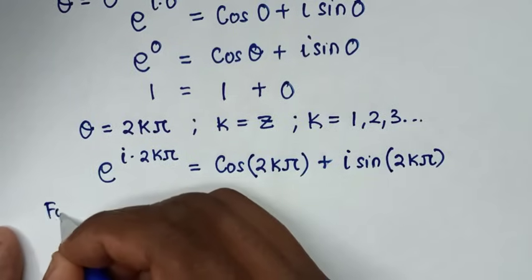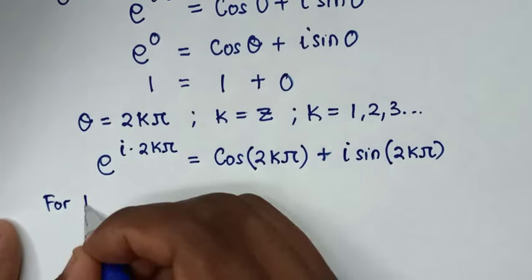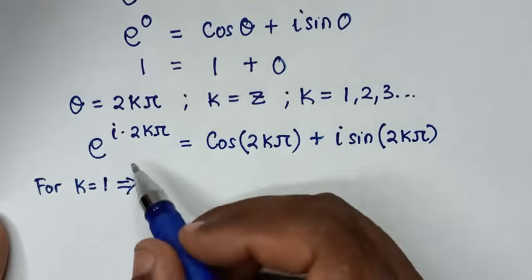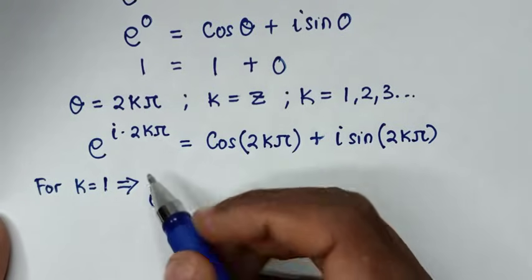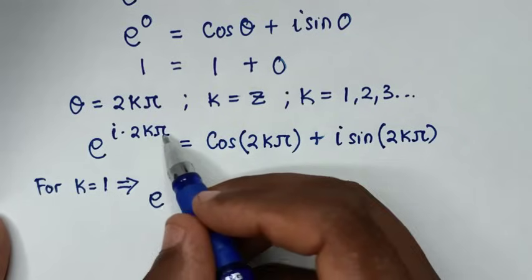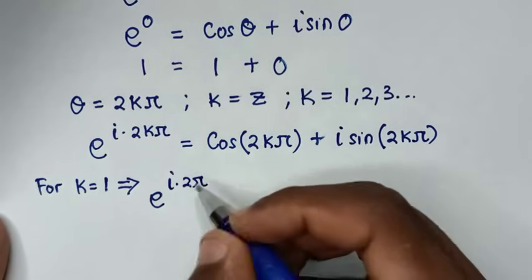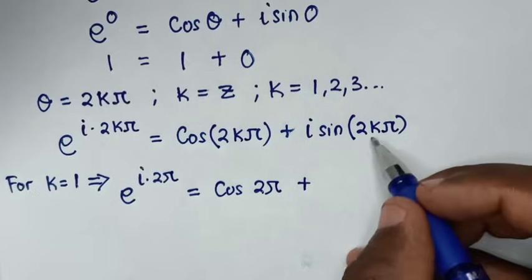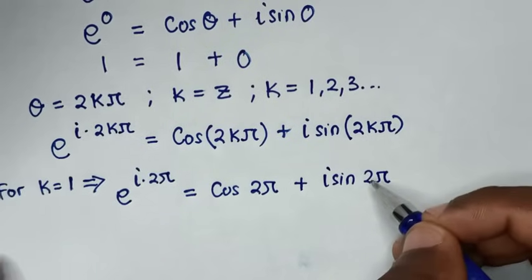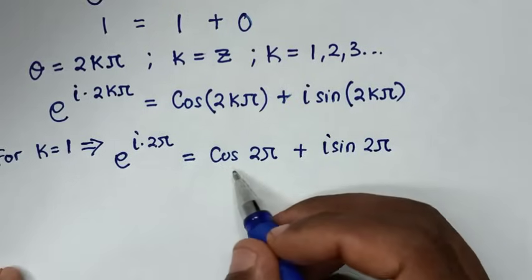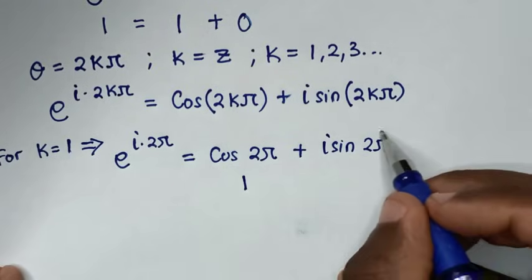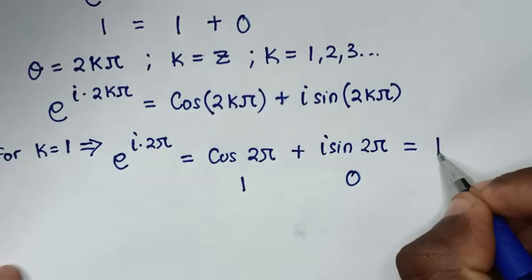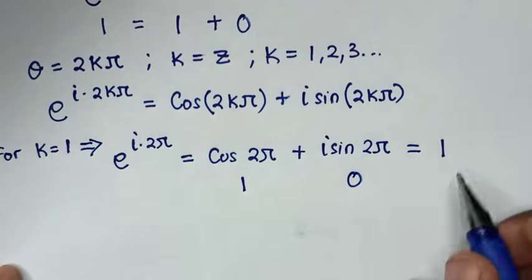Testing k = 1: e to the power of i·2π equals cos(2π) plus i·sin(2π). Cos(2π) is 1, and sin(2π) is 0, so 0 times i is 0. Therefore 1 plus 0 equals 1, meaning e to the power of i·2π equals 1.